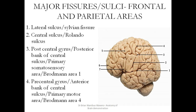This area is usually known as Brodmann area 1. Then you have the pre-central gyrus here, labeled 4. This is the anterior bank of the central sulcus, and it forms the primary motor area, or Brodmann area 4.